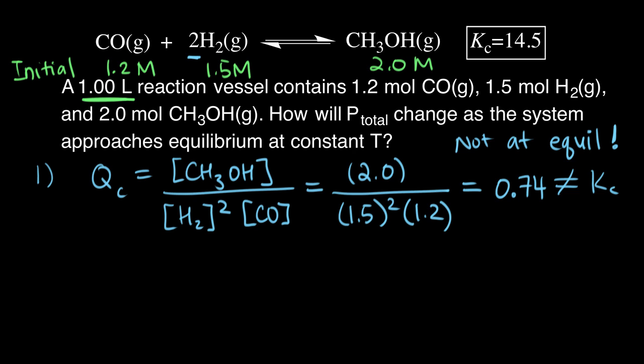The second thing we can do, using the reaction quotient, is figure out how the concentrations will change. Now that we know our reaction quotient Q, we know that our reaction quotient Qc is less than K. We can visualize this on a number line.